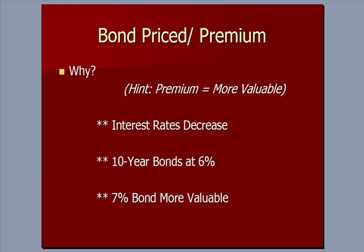Premium in everyday life means something more valuable — when you pay a premium for something. The same is true of bonds. If you think of a scenario where interest rates decreased, new bonds — new debt for 10 years — would be at a lower rate than before. In this example, it's now 6%. So as a result, if you were an investor and you were able to find a bond paying 7%, which is more than the current market for 10-year debt, that would be more valuable, which means it would have a higher price.